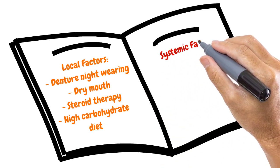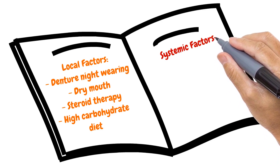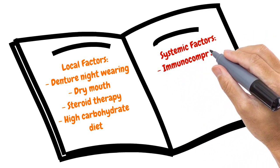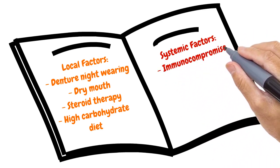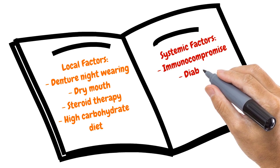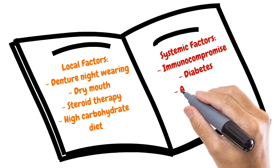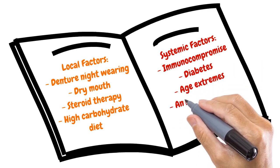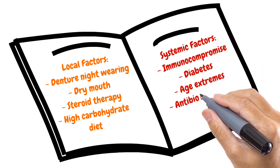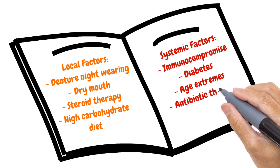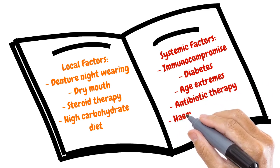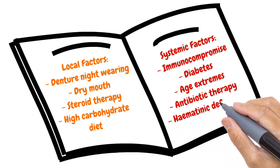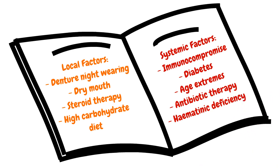Systemic factors that can put patients at risk include immunocompromised patients, patients with diabetes, age extremes — so newborn infants and elderly individuals — antibiotic therapy, and haematinic deficiencies such as anaemia.